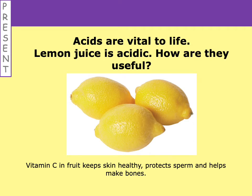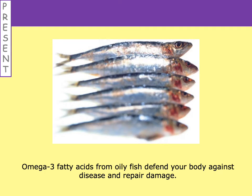Vitamin C is found in fruit like lemons, limes, and oranges, and it helps to keep skin healthy, protects sperm, and helps to make bones. It's essential that we have vitamin C in our bodies. Actually, vitamin C is ascorbic acid — so vitamin C is an acid and it is essential and vital. Another useful acid is omega-3 fatty acids, which you might have heard of on adverts. Omega-3 fatty acids protect our body against disease and help us to repair damage. We find those in oily fish — another acid that is essential to our lives.